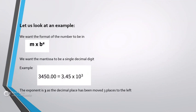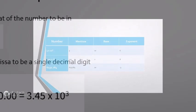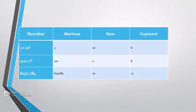Let's take an example. We want to convert a number into the given format: M into B raised to E. For example, 3450 is equal to 3.45 into 10 raised to 3. Here 3.45 is the mantissa, 10 is the base, and 3 is the exponent.